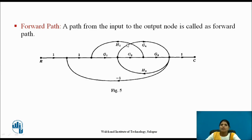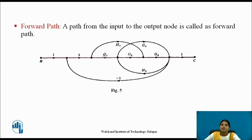Next is forward path. A path from the input node to the output node is called a forward path. Here r is the input node and c is the output node, so the path from r to c is the forward path, represented by p.